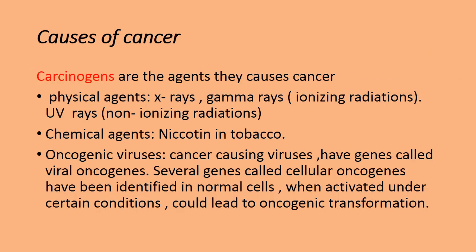Now, causes of cancer. The formation of a malignant tumor starts from a single cancer cell that divides continuously to form a mass of cells — the tumor. The question is: what turns a normal cell into a cancerous cell? There are certain agents responsible for converting normal cells into cancerous cells, ultimately leading to malignant tumor formation. Those agents are called carcinogens — they cause cancer by turning normal cells into cancer cells.